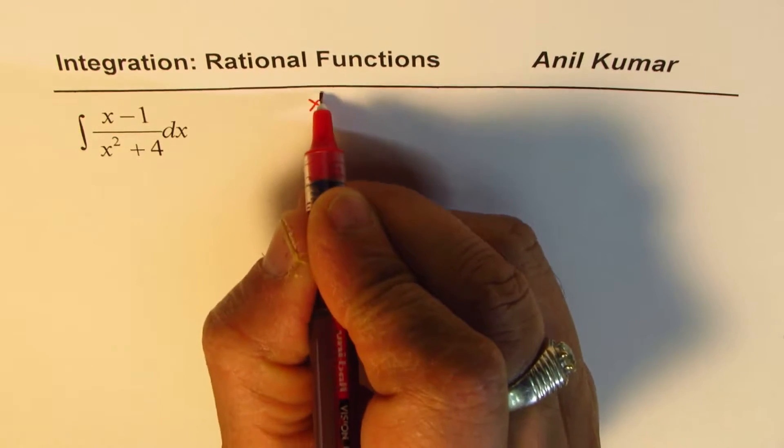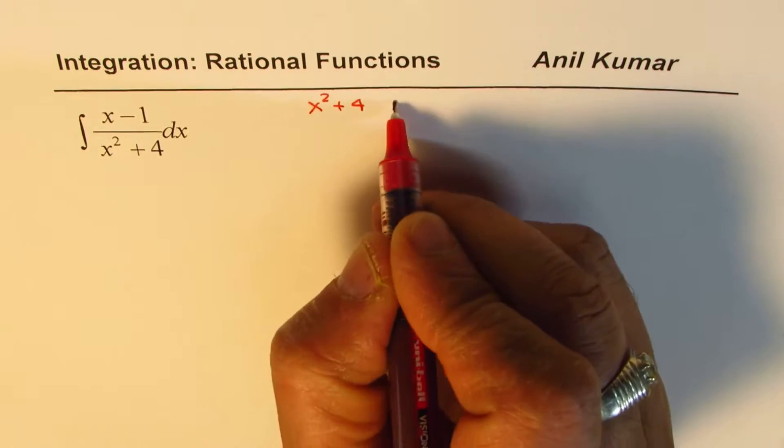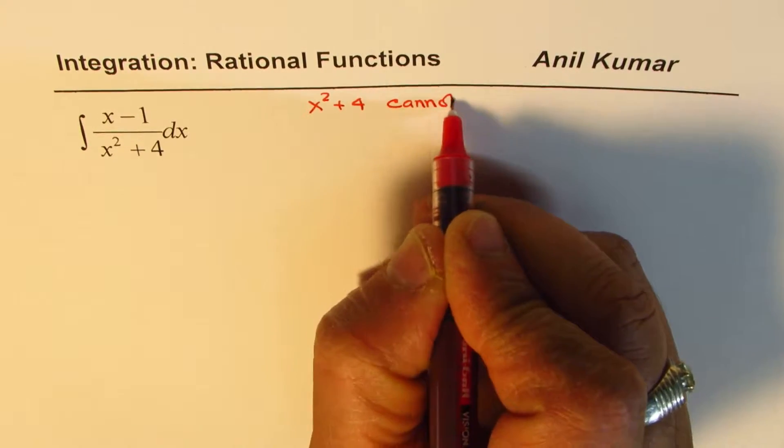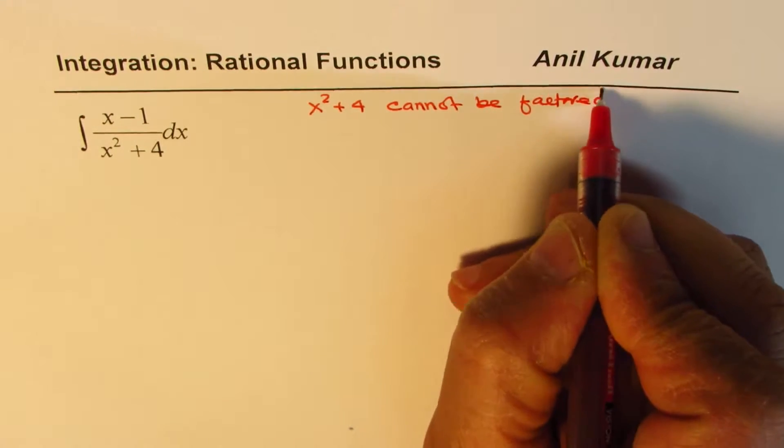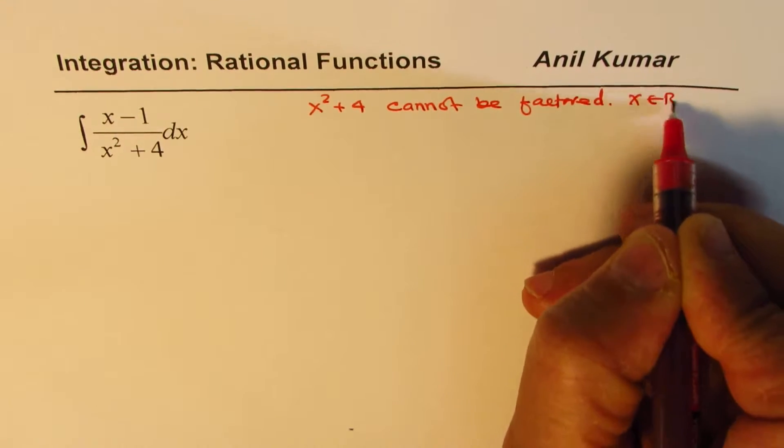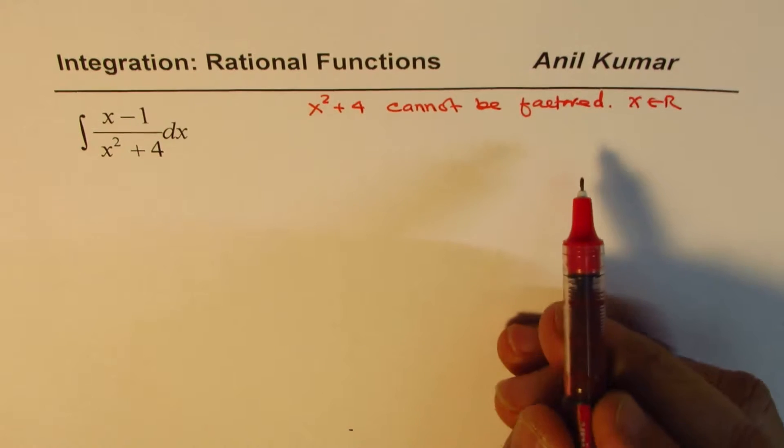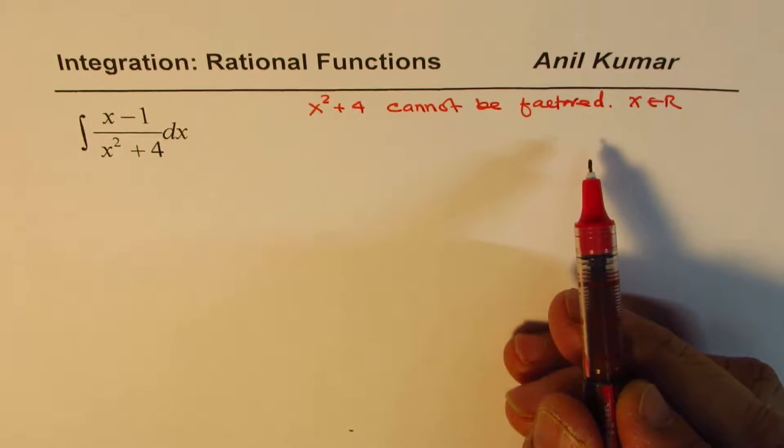So, x squared plus 4 cannot be factored. We are talking about x belongs to real numbers. So, in that case, we need to use different techniques.